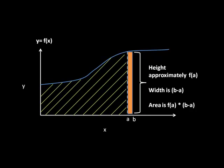However, if a and b are very, very close together, then we can assume that the shaded region is in fact a rectangle with height f of a and width b minus a.